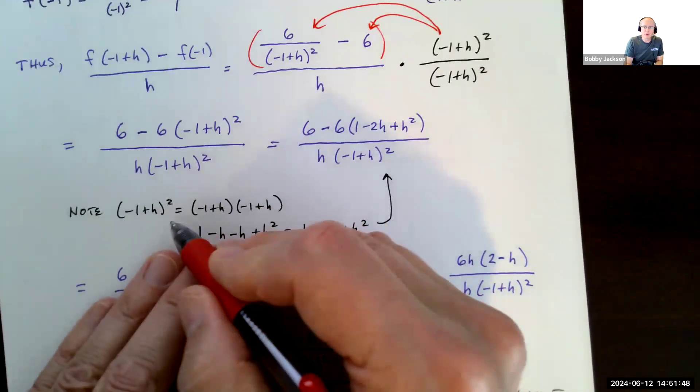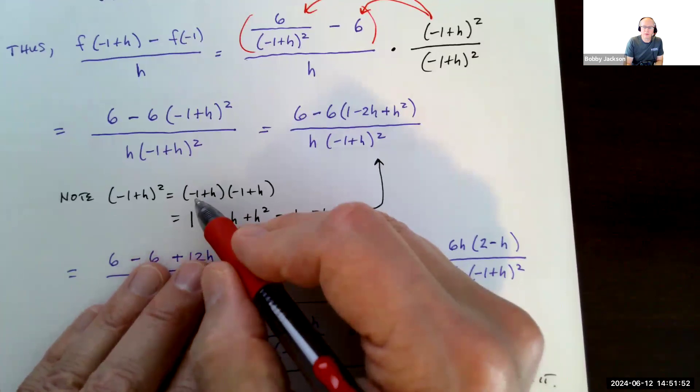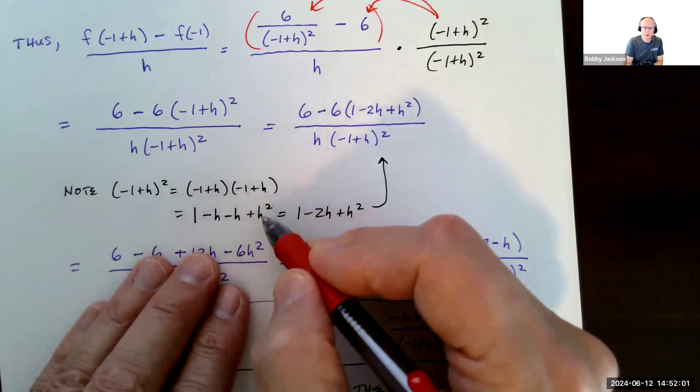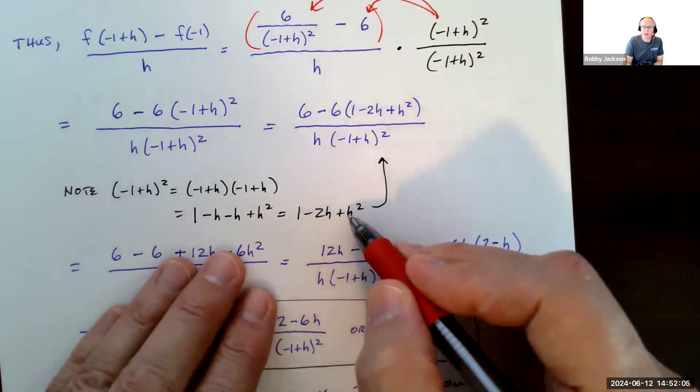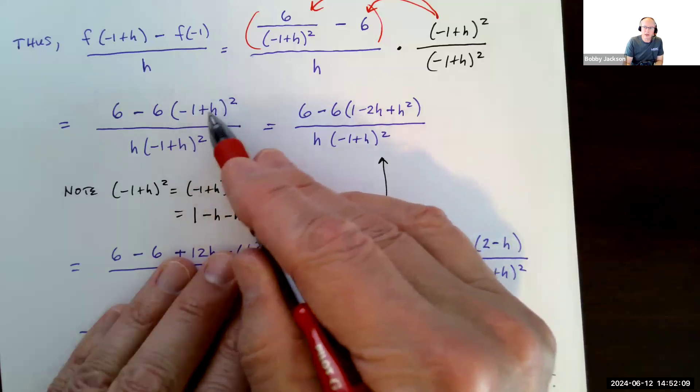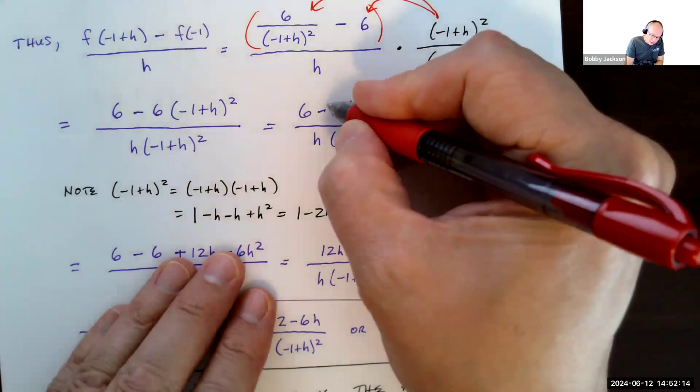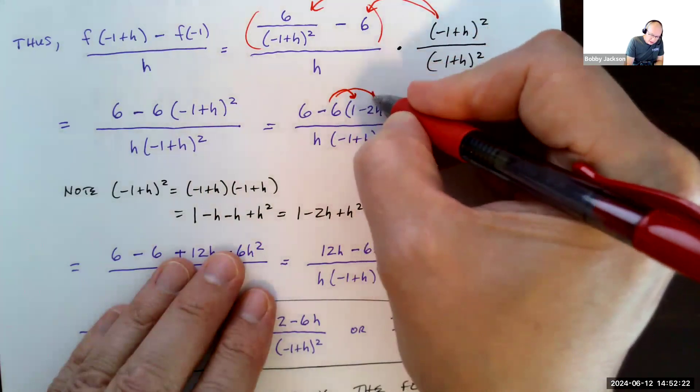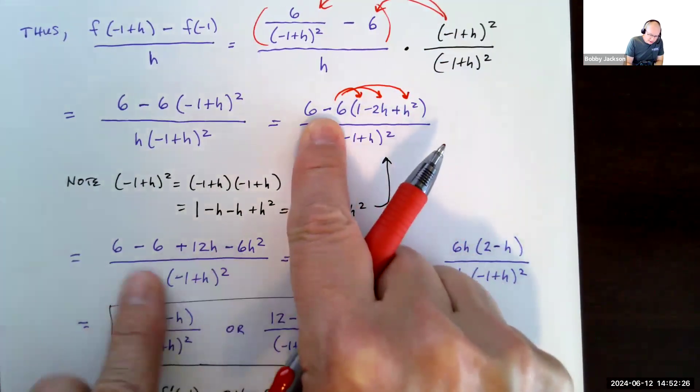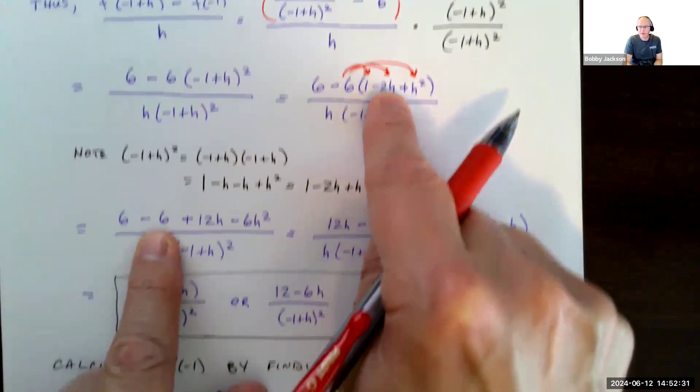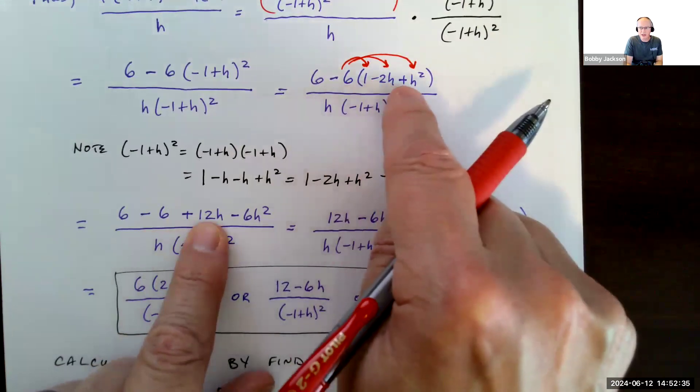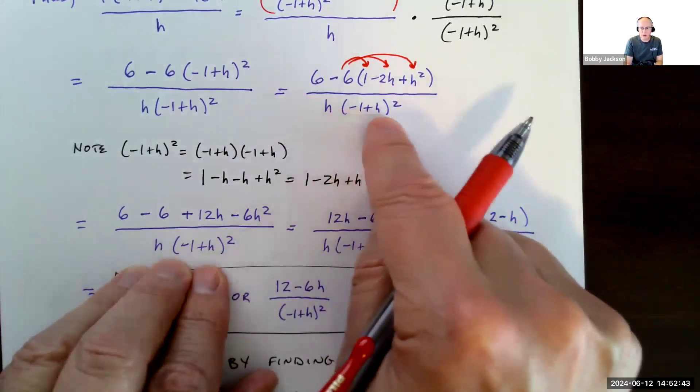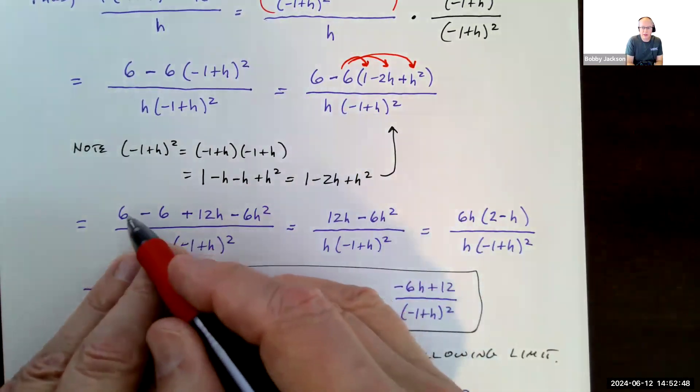What I'm going to do is actually expand this numerator out and then combine like terms. So first of all, what is negative 1 plus h quantity squared? That's negative 1 plus h times negative 1 plus h. So FOIL: first, negative 1 times negative 1, positive 1. The outer is negative h. The inner is negative h. And the last, h times h, is h squared. Combine our like terms, we get 1 minus 2h plus h squared. I'm literally going to replace this negative 1 plus h quantity squared with this. Now I'm going to distribute. This is plus a negative 6. So I'm distributing the negative 6 through these three terms. So I've got 6. Negative 6 times 1 is negative 6. Negative 6 times negative 2h, positive 12h. Negative 6 times positive h squared, negative 6h squared. At the bottom, I leave alone. Do not foil that out. Leave it factored. The top I can simplify.